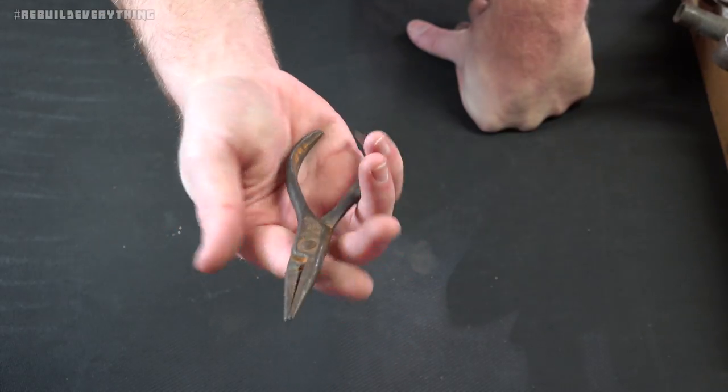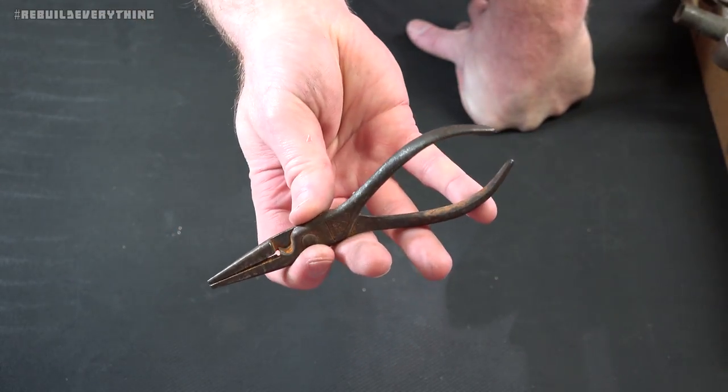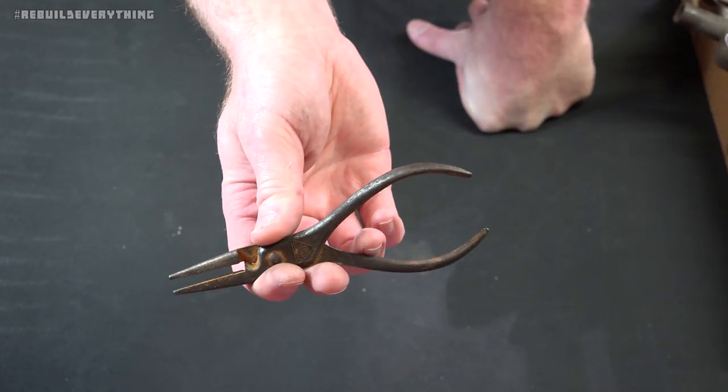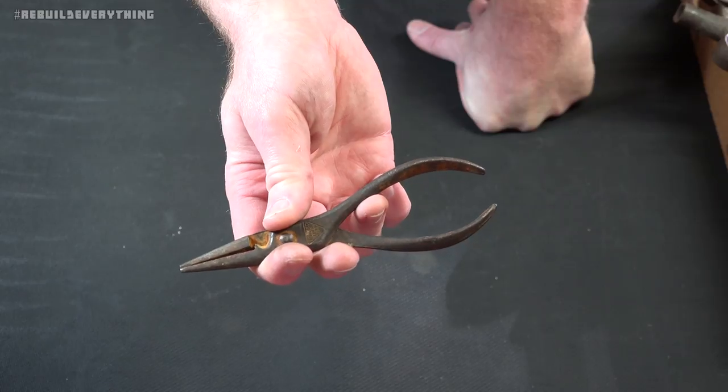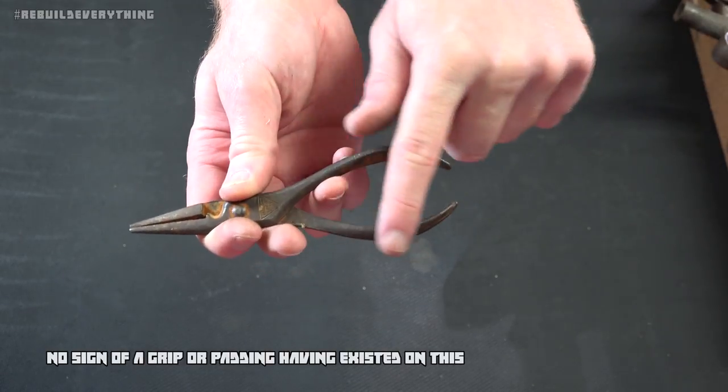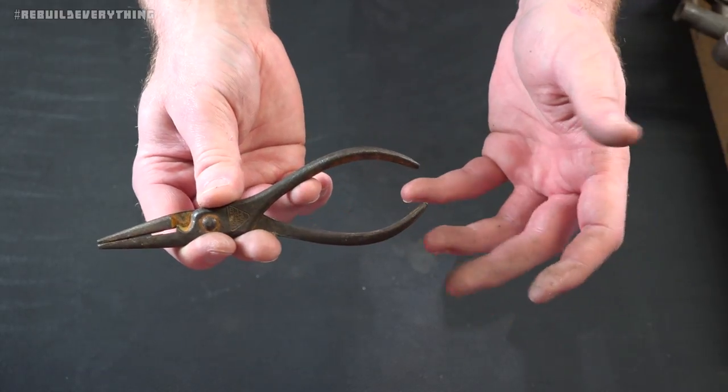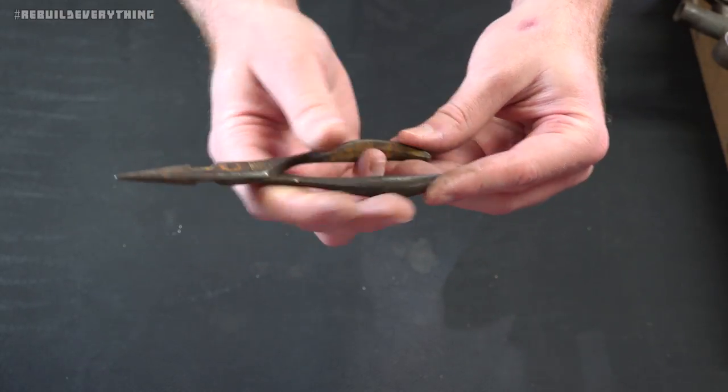My guess on that would be '50s, not super sure. There's no indication, but usually once you get much newer than the '60s you start to see the foam and the dipped handles and stuff like that. Of course, you'd see branding on anything from any company that wanted to get their name out there.